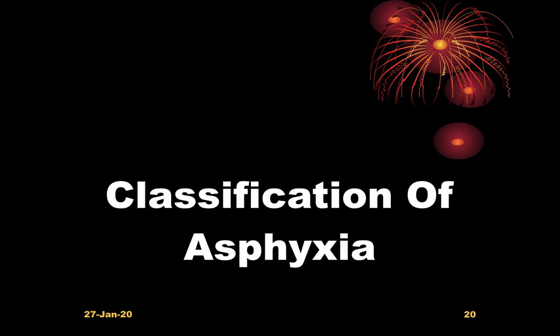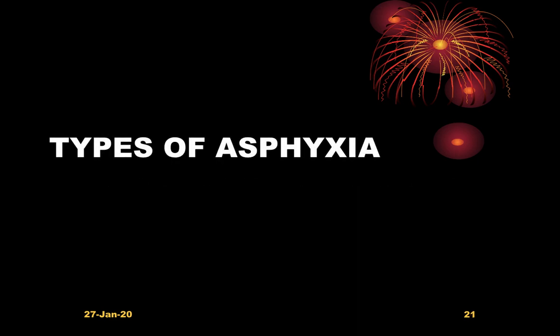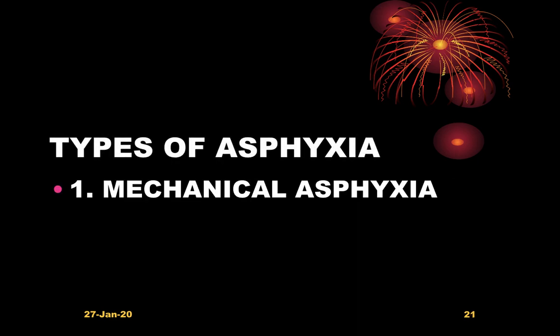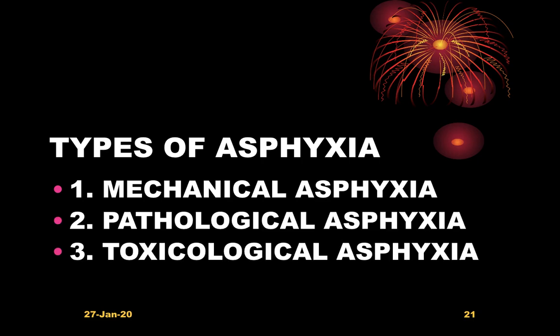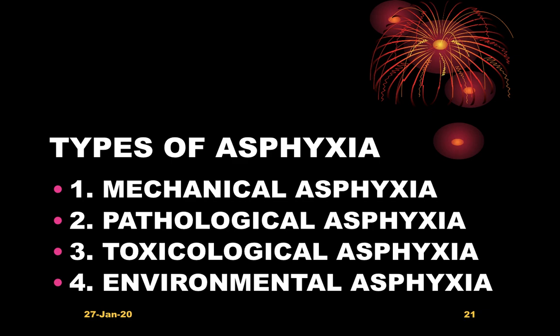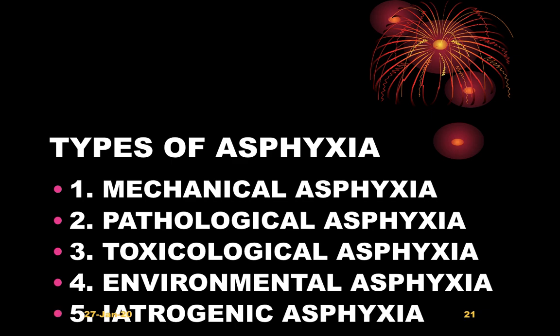Starting with the classification of asphyxia: the types are mechanical asphyxia — which forensic practitioners are most concerned with — pathological asphyxia due to disease, toxicological asphyxia, environmental asphyxia, and hydrogenic asphyxia.